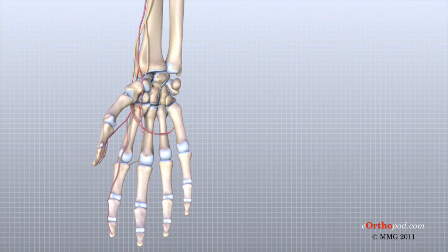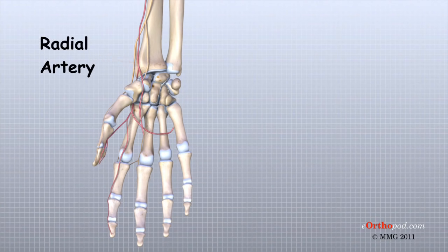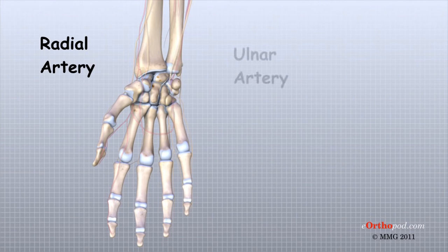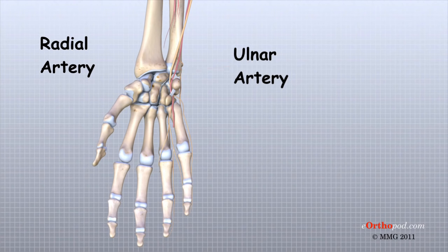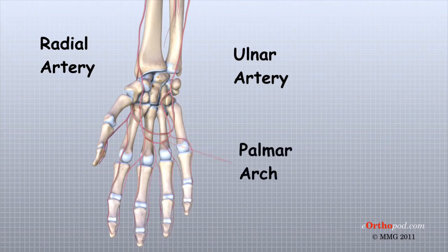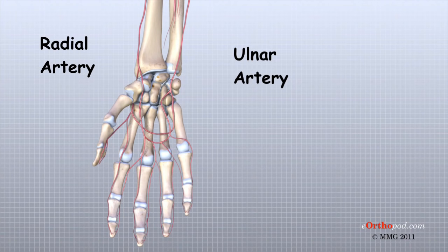Traveling along with the nerves are the large vessels that supply the hand with blood. The largest artery is the radial artery, which travels across the front of the wrist closest to the thumb. The radial artery is where the pulse is taken in the wrist. The ulnar artery runs next to the ulnar nerve through Guyon's Canal. The ulnar and radial arteries arch together within the palm of the hand, supplying the front of the hand, fingers, and thumb. Other arteries travel across the back of the wrist to supply the back of the hand, fingers, and thumb.